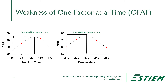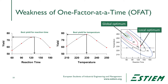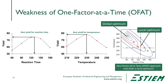The weakness of one factor analysis at a time is that it only gives a local optimum. If we look at the global process, the global optimum occurs somewhere else because there's an interaction effect between temperature and time. The final result from OFAT does not give us the best yield — the best yield is actually 91%. What we'd like to do instead is see how all combinations of factors interact in an experiment.